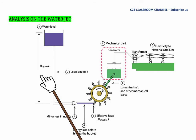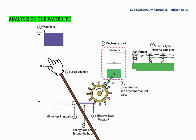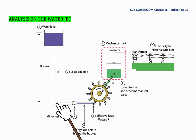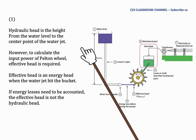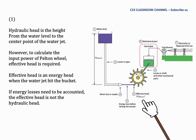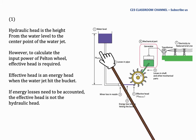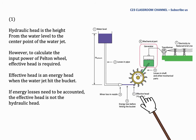Normally, the hydraulic head is taken as the level from the water surface at the dam to the center point of the nozzle. However, to calculate the input power of the Pelton wheel, the effective head is required. The effective head is not equal to the hydraulic head — it represents the effective energy that provides the input power to the Pelton wheel.